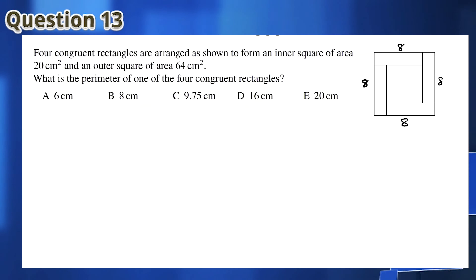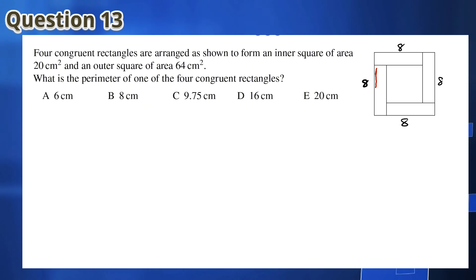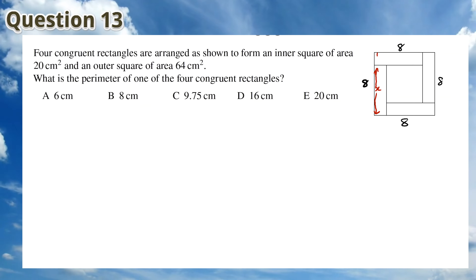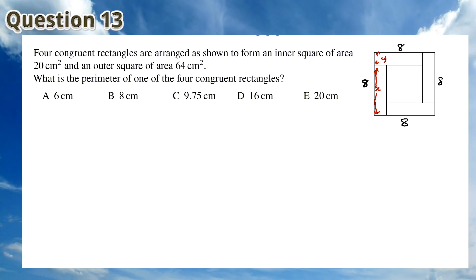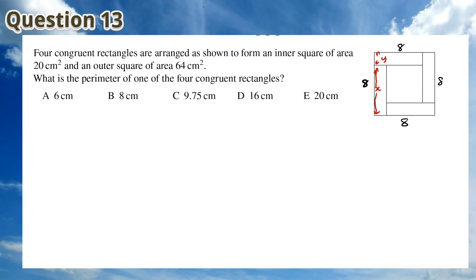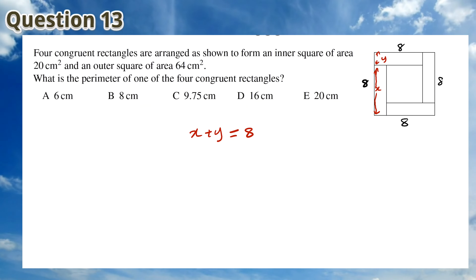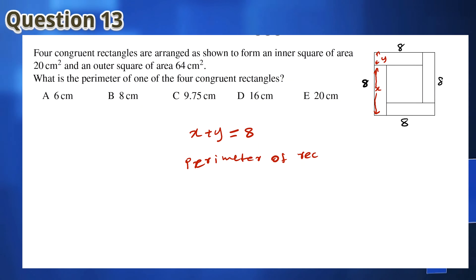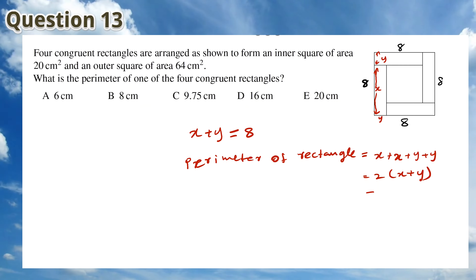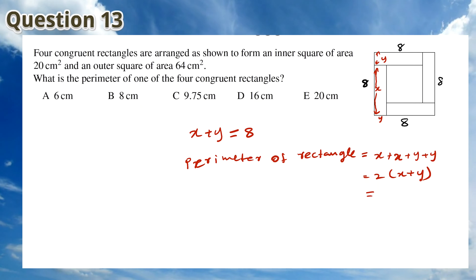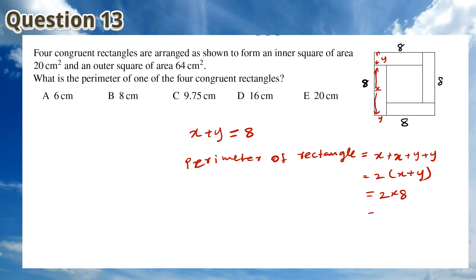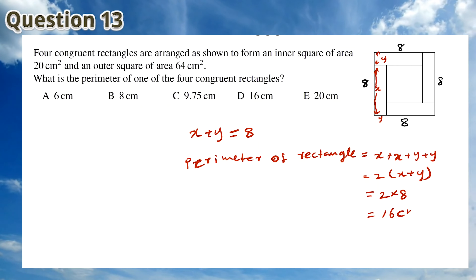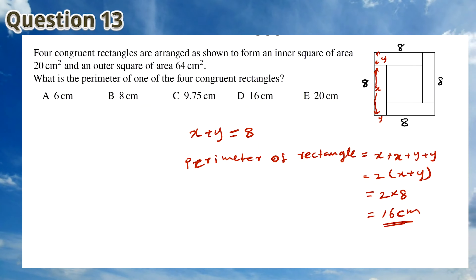For Question 13, one side of the square is equal to 8 centimetres because the area of the square is equal to 64 centimetres squared. We can mark x and y as per the diagram. We know that x plus y is equal to 8 and the perimeter for one rectangle is equal to x plus x plus y plus y, which is equal to 2 multiplied by x plus y. We know that x plus y is equal to 2 multiplied by 8, which is 16 centimetres. This means that the answer is D.